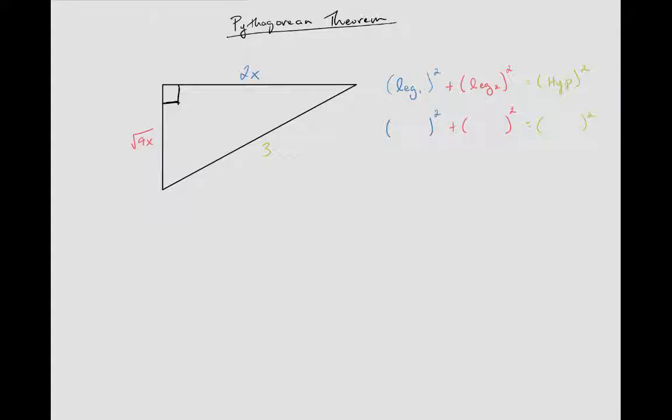Alright, let's do another Pythagorean theorem problem, this time with an algebra upgrade. In this problem, we're going to identify our legs. We have one leg with a value of 2x, another one with √(9x²), and our hypotenuse is 3.